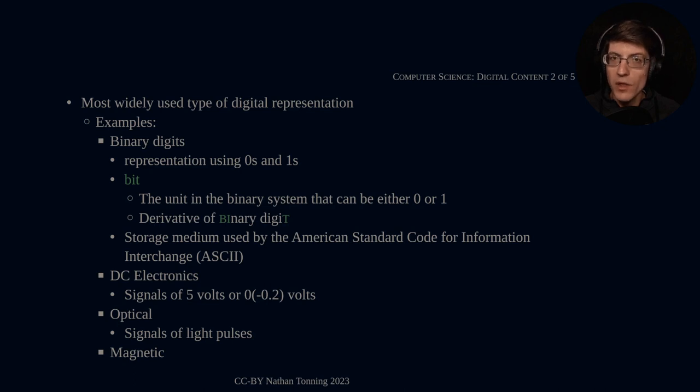The unit, whether it's a zero or one in the binary system, is called a bit. It's derivative of binary digit—the BI of binary and the T of digit. This binary system is almost universal. A little teaser to our next video: it is the storage medium used by the American Standard Code for Information Interchange, or ASCII. That will be the topic of our next video, which is the method by which characters such as the alphabet, numbers, special characters like the escape key, the enter key, the return key—those are coded using binary digits according to the ASCII standard.